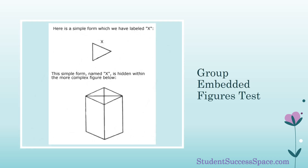Witkin then developed the group embedded figures test to ascertain field independence and field dependence. This test required test subjects to find a hidden simple figure within a complex design. The responses were received as field independence or field dependence. Field independent individuals would be able to quickly find the hidden figure, while field dependent individuals would struggle to find the hidden figures.